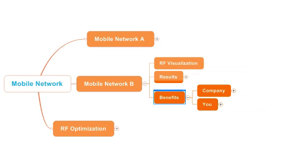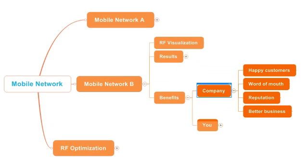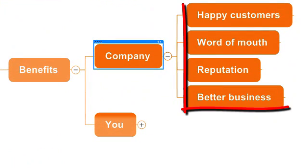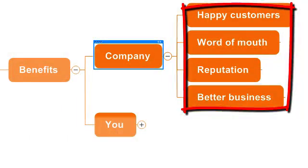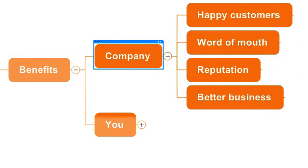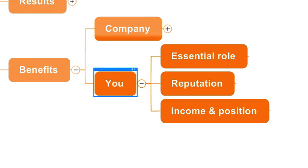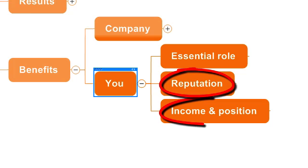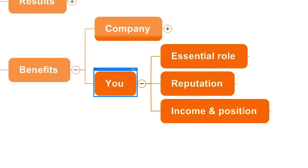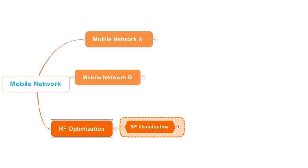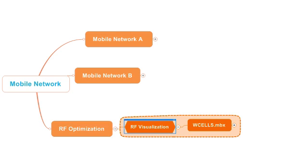Consequently, the company has happy customers who spread the word of mouth, boosting the reputation of the company and resulting in better business with more customers and higher profits. The benefits do not stop there. When you are the person doing the RF optimization, you play an essential role in the success of the company. The fact that you are able to give results faster, better, and with greater precision than others is reflected in your reputation, giving you a better income and position. In a nutshell, visualization is the key component of RF optimization, and the tool that makes that possible is Wcells.mbx.